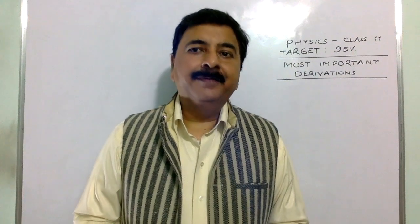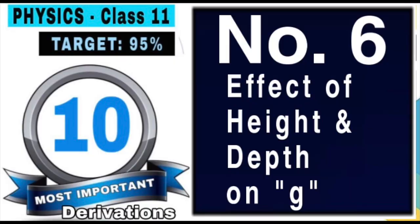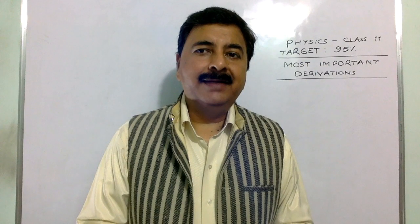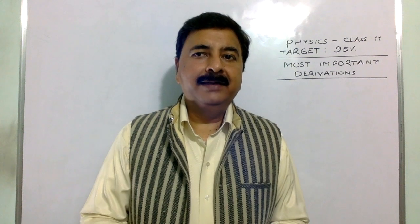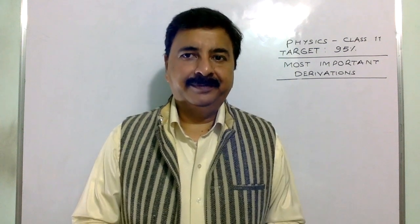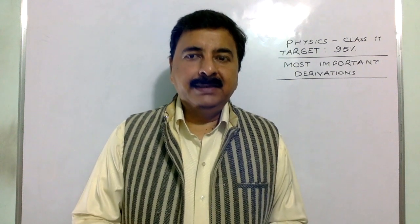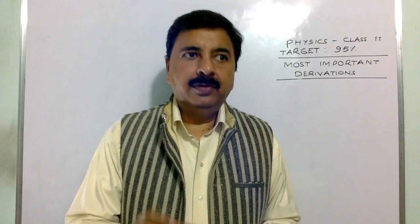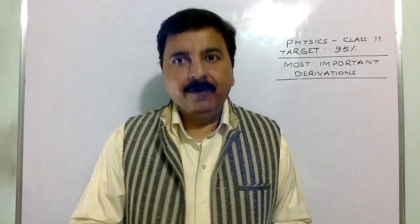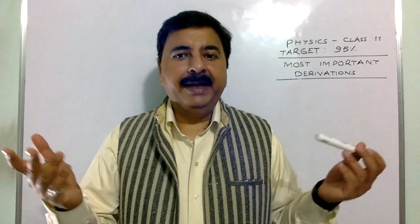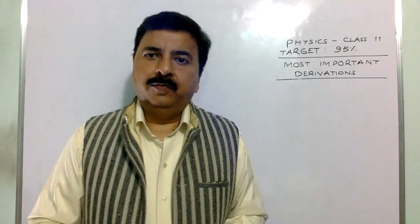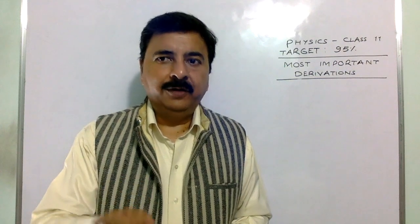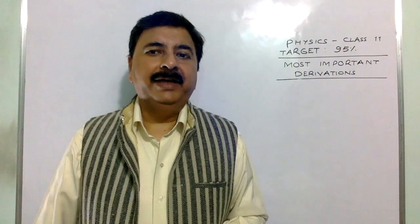Derivation number 6 is the effect of height and depth on small g — acceleration due to gravity. This derivation is from the gravitation chapter. You must know what is the graph of small g with height and depth. Either from the height or from the depth, one derivation is sure.